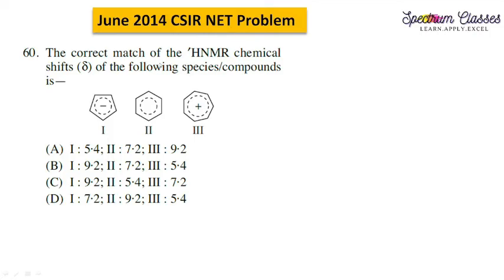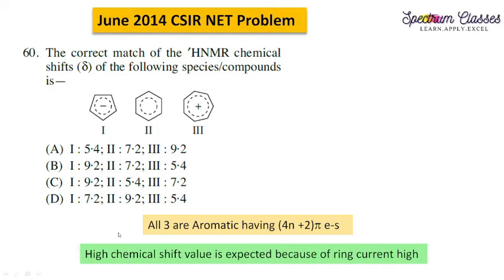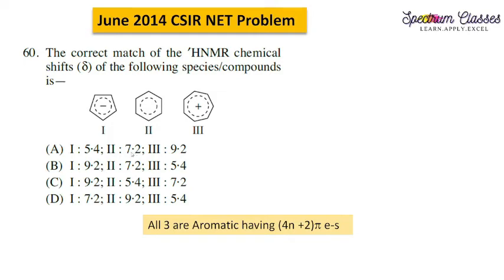Another example is from the CSIR June 2014 exam: find the correct match of the 1H NMR chemical shift delta for the given species. There are three structures and four options. All three molecules are aromatic because they follow the 4n+2 pi electron rule and are planar with conjugation. A high chemical shift is expected due to ring current. Since benzene resonates at 7.27 ppm, and the second molecule has 7.2 in options A and B, we can eliminate C and D.